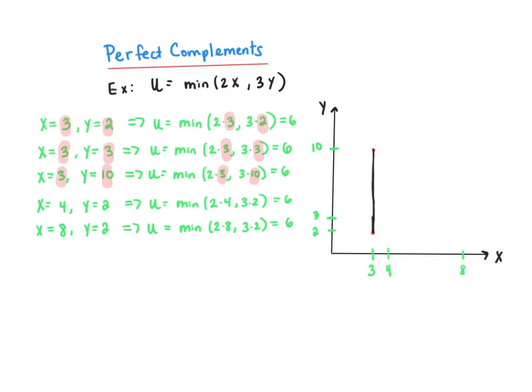If you keep x at 3, it doesn't matter how much additional y beyond 2 you give this consumer, because she needs to consume both goods in a fixed proportion. Likewise, if we hold y constant at 2 and increase only x, utility will stay at 6. Giving this consumer more of good x without also giving him more of good y makes him no better or worse off. So what I hope you see is that for perfect complement goods, the indifference curves are L-shaped. If you increase one good without increasing the other in some fixed proportion, you make the consumer no better or worse off.